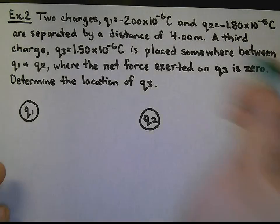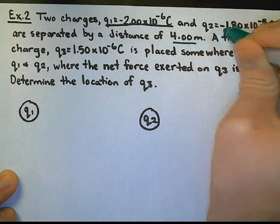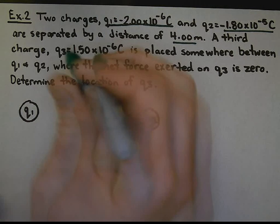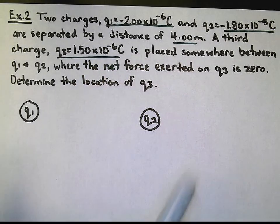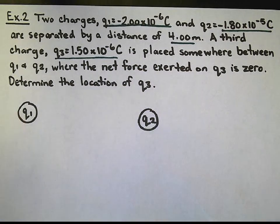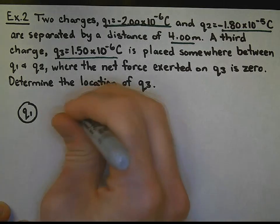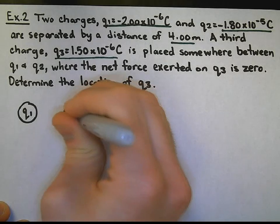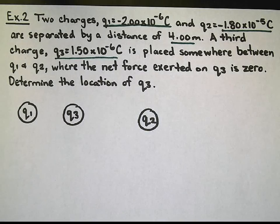I am going to underline everything that we are given in this case. It's pretty easy. We also have Q3, which is 1.50 times 10 to the negative 6, and that is placed somewhere in between Q1 and Q2. I'm going to place Q3 here. We're looking to figure out the location of Q3.